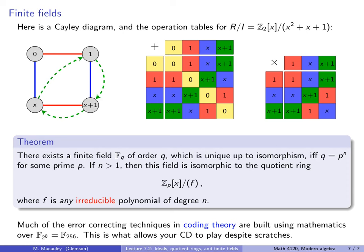In closing, it's worth mentioning that much of the error-correcting techniques in the field of coding theory are built using mathematics over the finite field of order 256. Coding theory is an area of applied mathematics involving encrypting and sending coded messages subject to possibly perturbations of the bits or errors. These types of algorithms are what allows your CD, DVD, or Blu-ray disc to play despite scratches — there's a lot of advanced mathematics behind the scenes, and a lot of it strongly involves the theory of finite fields.